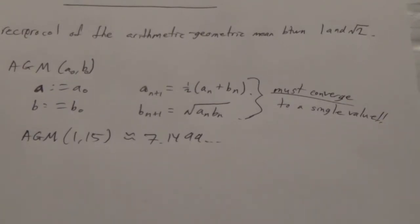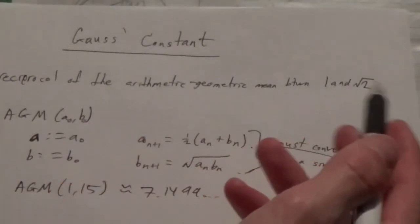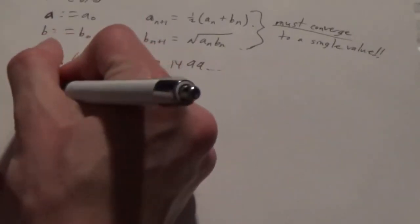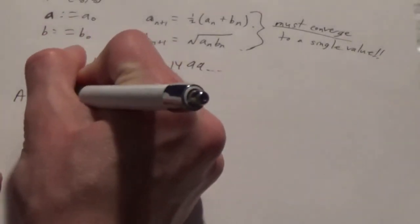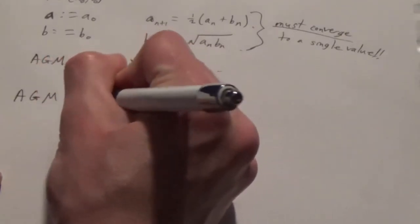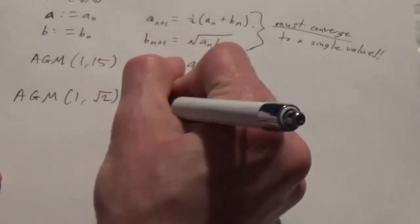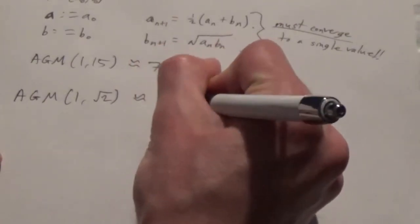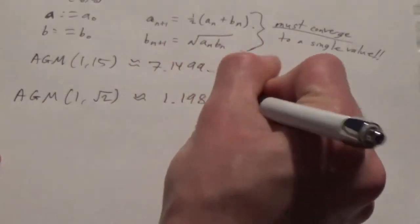So, Gauss's constant, if you're curious, is defined to be, of course, the reciprocal of the AGM of 1 and the square root of 2. So I also incorporated this into my program in calculating the AGM of 1 and the square root of 2, and that turned out to be approximately 1.198140.